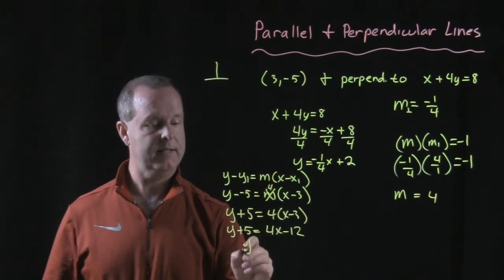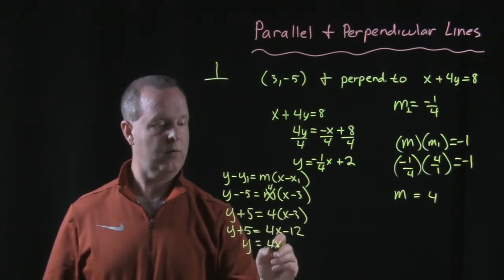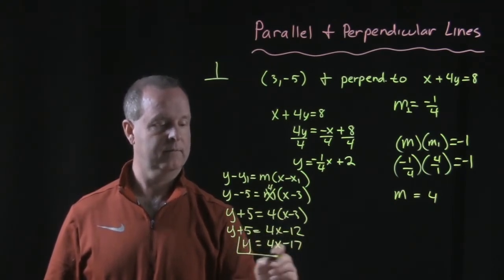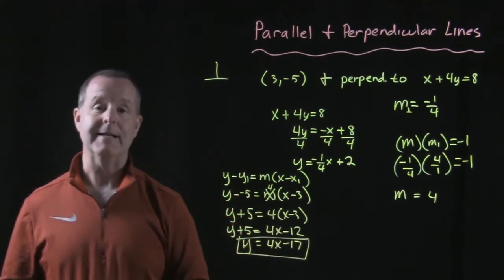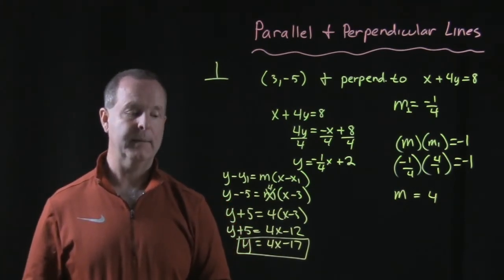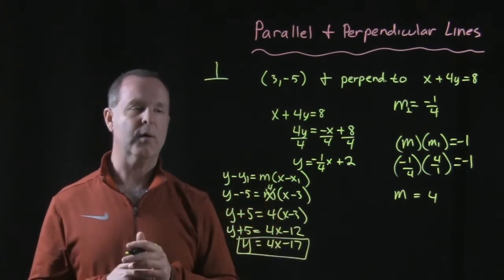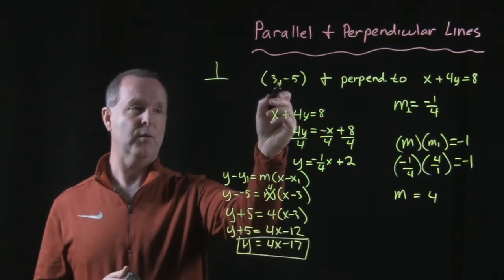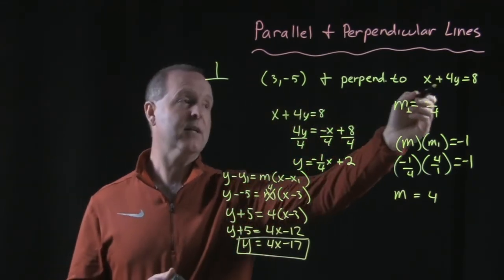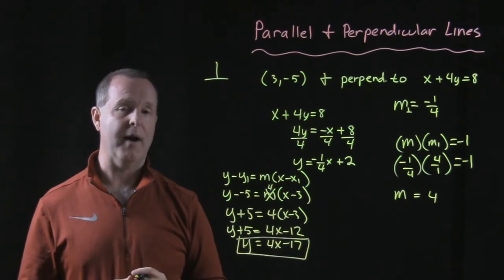Subtract 5 from both sides. y = 4x - 17. And there's my slope intercept form of a line that meets these two requirements: passes through the point (3, -5) and it's perpendicular to x + 4y = 8.